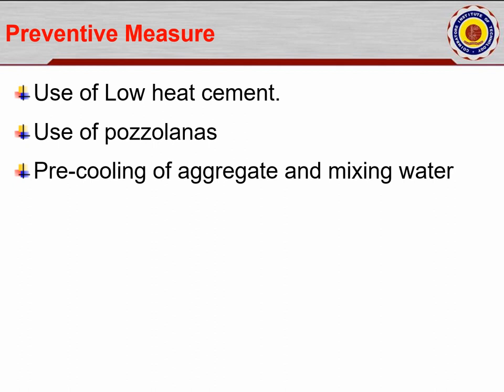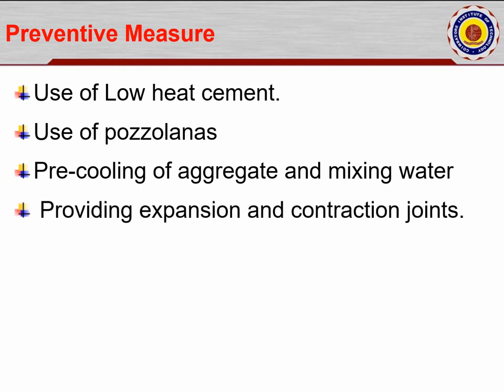Providing expansion and contraction joints as per codal provisions — specifying 18 to 20 meter spacing — is very important. In walls, chicken mesh is placed every four to six courses to arrest crack development at that point. Expansion joints arrest cracks at a particular level, helping to minimize cracks and ensure the structure remains more durable. Even if a crack develops, it should be arrested within a particular limit.